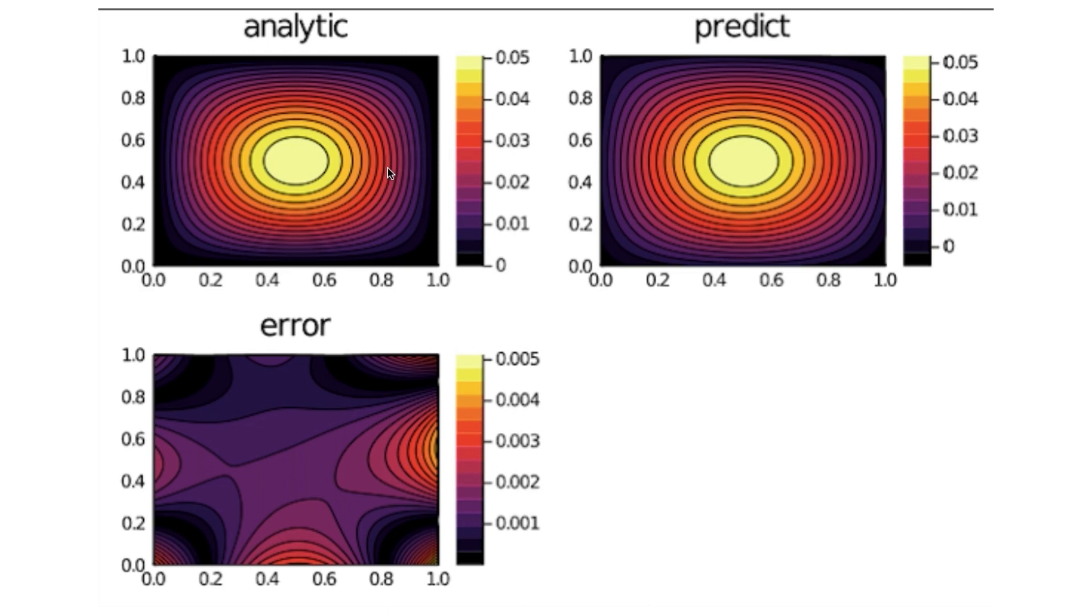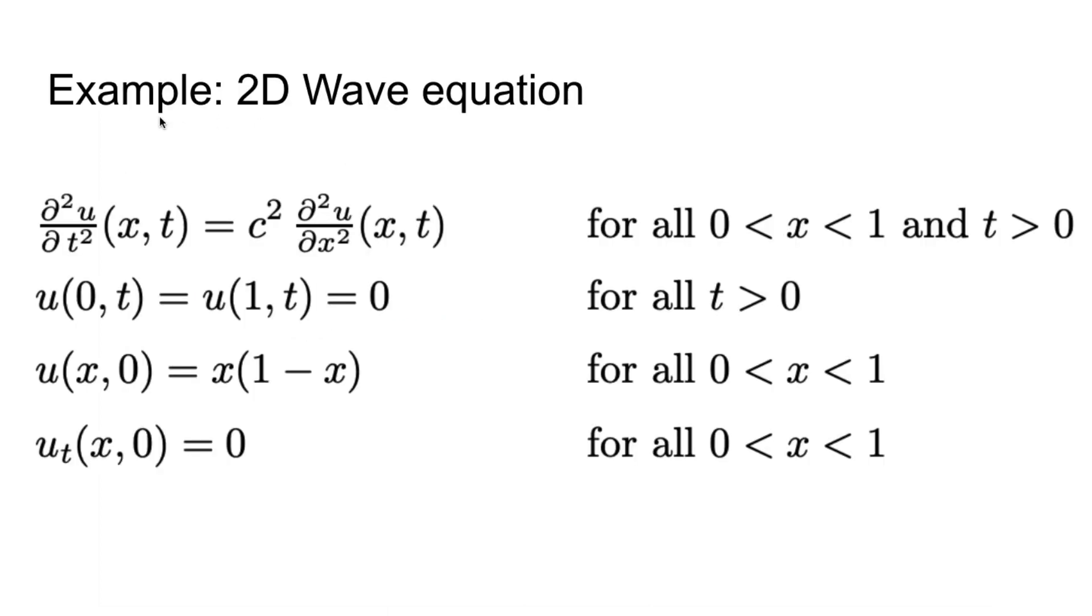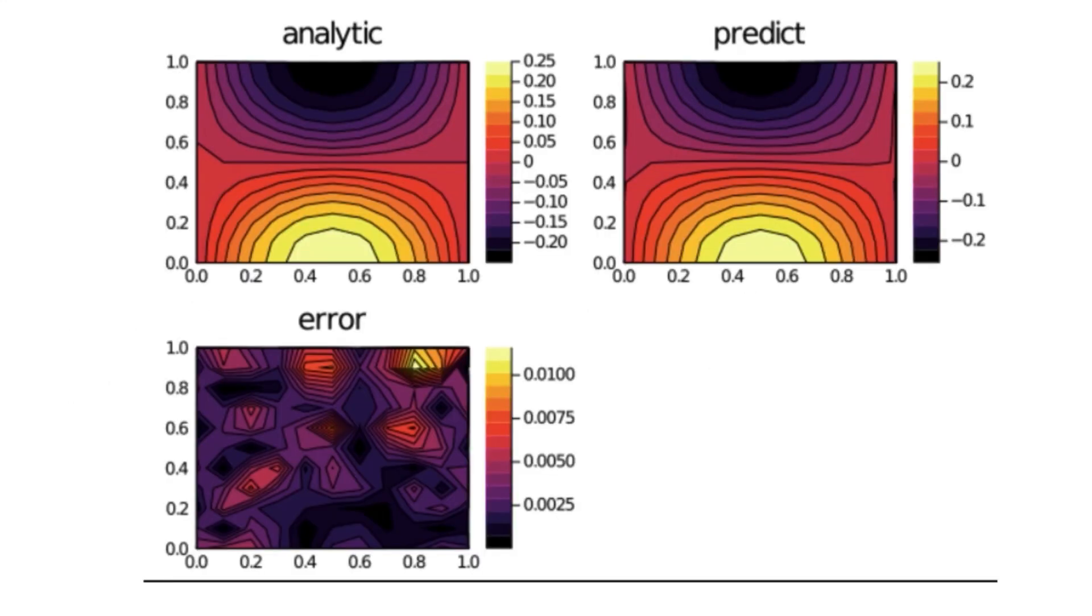I'll also show a second example: a two-dimensional wave equation with two Dirichlet boundary conditions and one Neumann condition. x exists in this area and t also exists from 0 to 1. I'll skip all details about the code because it's the same as in the previous example. Let's just go to the result. Here, the same - we have some analytical, predicted, and error between the solutions.